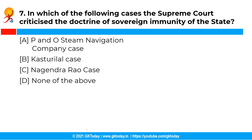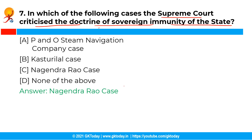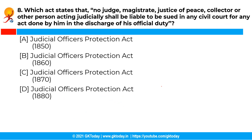The next question is: in which of the following cases did the Supreme Court criticize the doctrine of sovereign immunity of the state? The correct answer is option C, the Nagendra Rao case. The Supreme Court of India criticized the doctrine of sovereign immunity of the state and adopted a liberal approach with respect to the tortious liability of the state in the Nagendra Rao case of 1994.